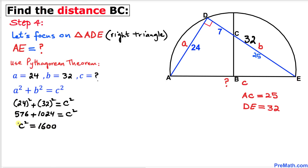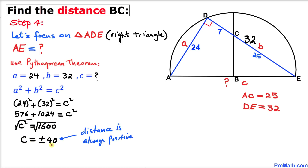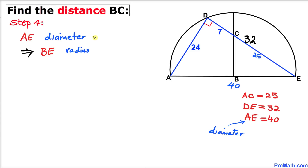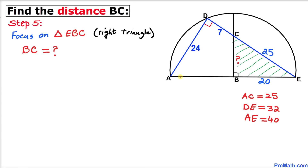Calculating: c² = 576 + 1024 = 1600. Taking the square root of both sides, c = ±40. Since distance is always positive, c = 40. So line segment AE = 40 units. Since AE is the diameter, the radius BE = 40 ÷ 2 = 20 units.